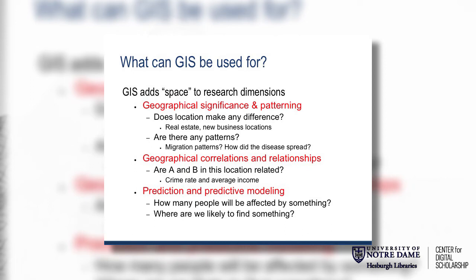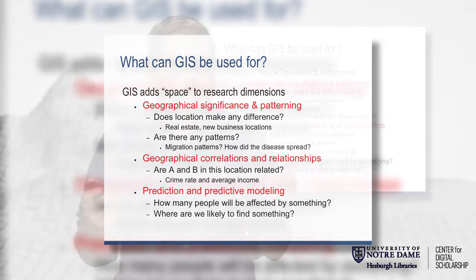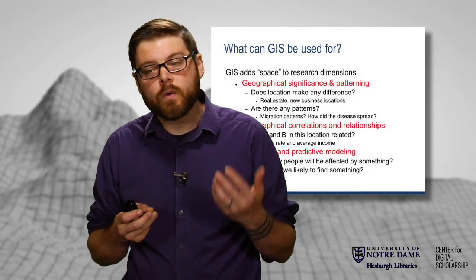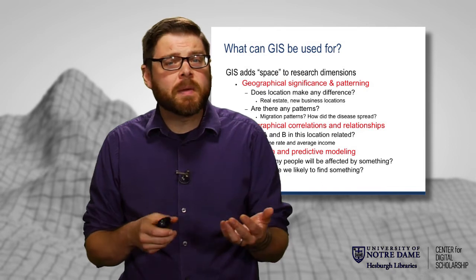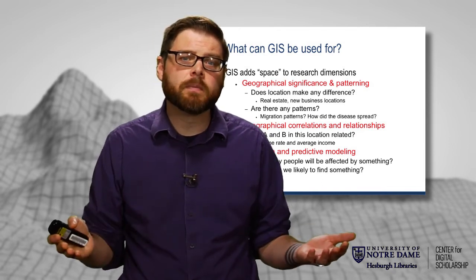What GIS allows us to do is add spatial dimensions to research. We can begin to address geographic significance or patterning — does location really make a difference for a particular thing? Is there more of something in one area than another? We can look at geographic correlations and relationships — do we tend to find more crime in areas of lower income, or more of an endangered species in a particular type of forest? And we can do things like prediction and predictive modeling — how many people might be affected by a particular outbreak or a broken water main, or where we're likely to find a particular endangered species — simply by combining different data layers together to create these models.